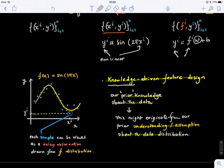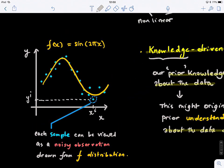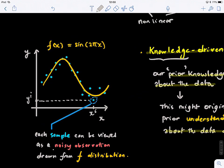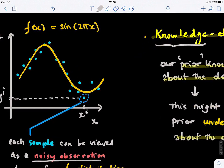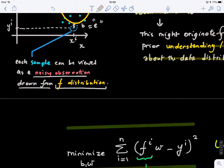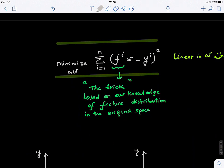So here, each point, each sample can be viewed as a noisy observation drawn from a generating function, or a generating function f. Why is it noisy? Because it's an approximation. So this bias, actually, you can think of it also as some noisy. In some models, they use noise. Okay, so let's look at how we formulate this. So it's so simple.